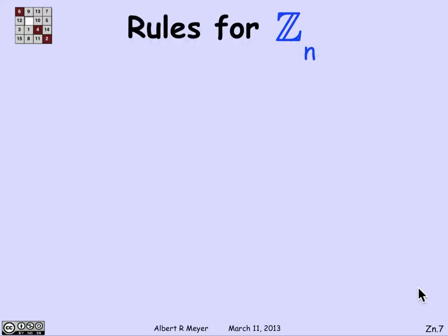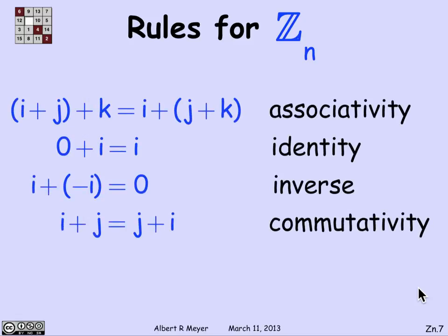Now, once you've got this self-contained system Z_n, you can start talking about algebraic rules that it satisfies. And now, they hold with equality and they're pretty familiar. So let's look at some of the rules for addition, for example, that hold true in Z_n.